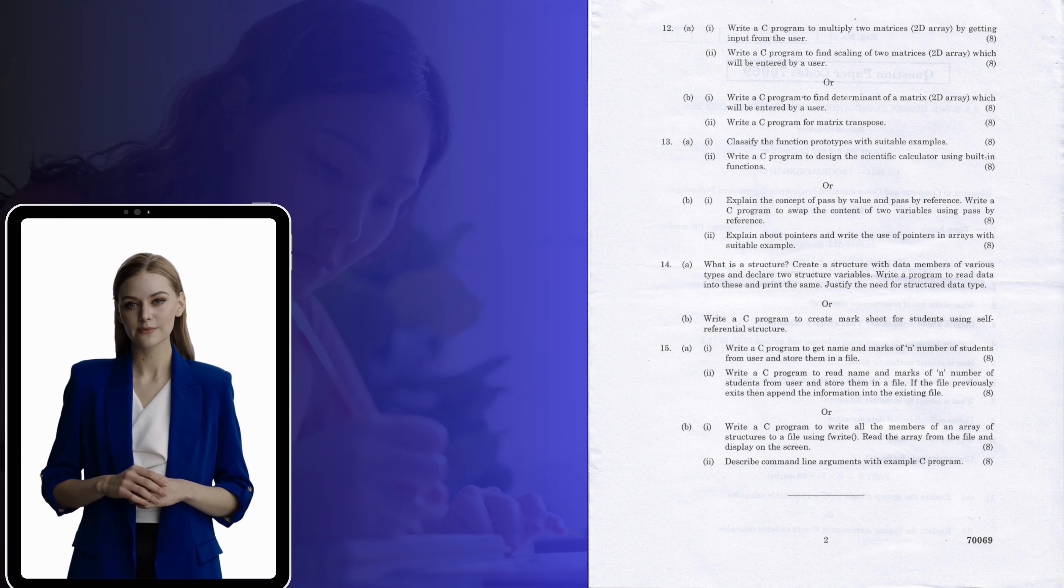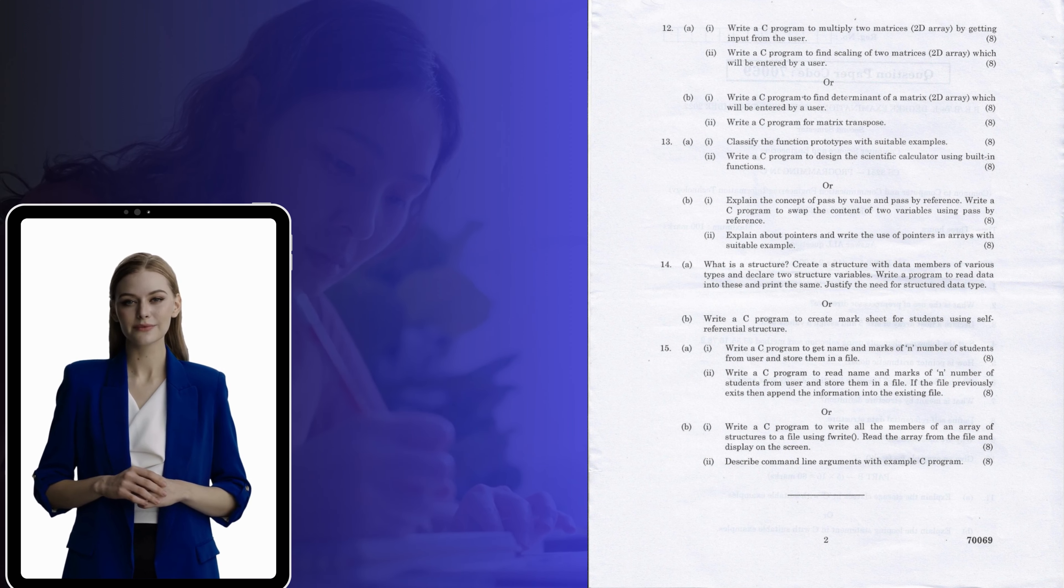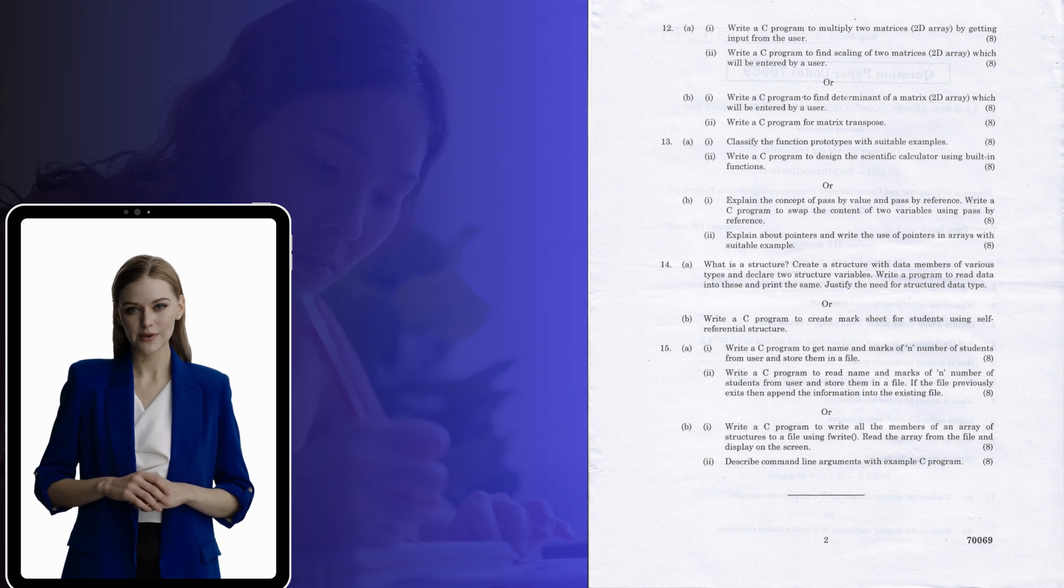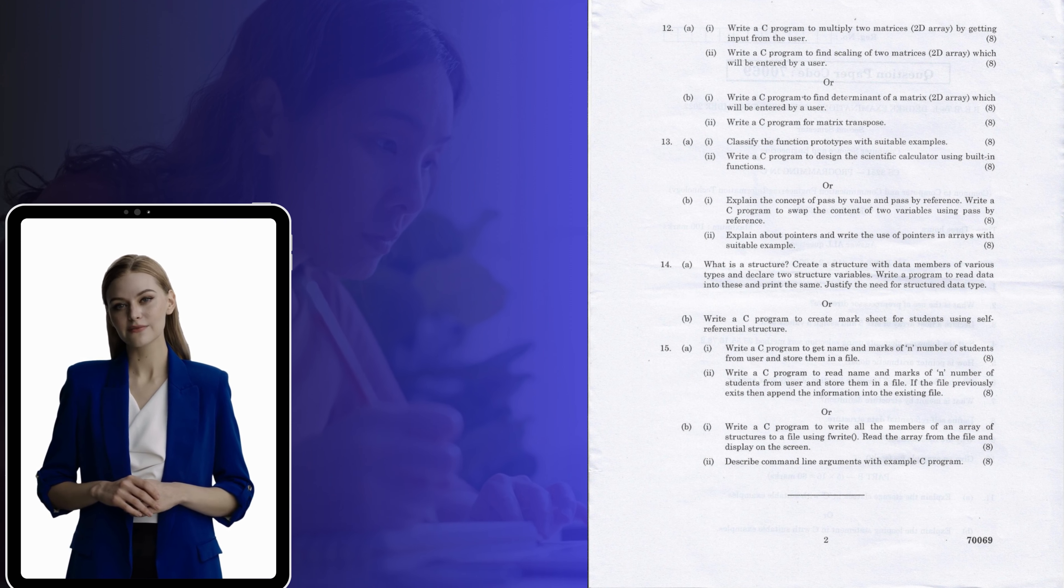Or B. Write a C program to create mark sheet for students using self-referential structure. 15 A. i. Write a C program to get name and marks of n number of students from user and store them in a file. ii. Write a C program to read name and marks of n number of students from user and store them in a file. If the file previously exists, then append the information into the existing file.